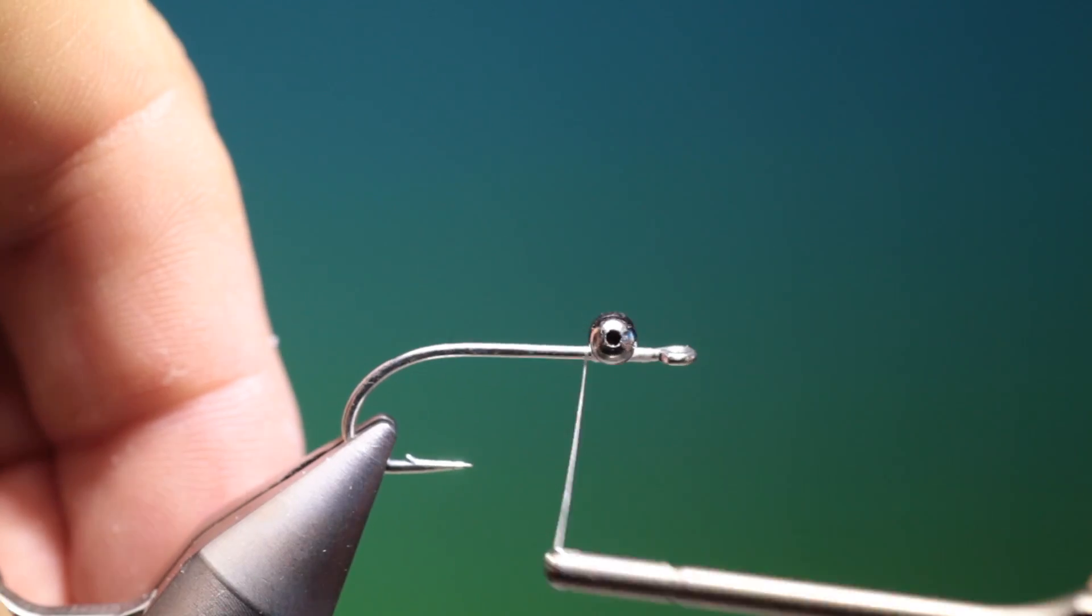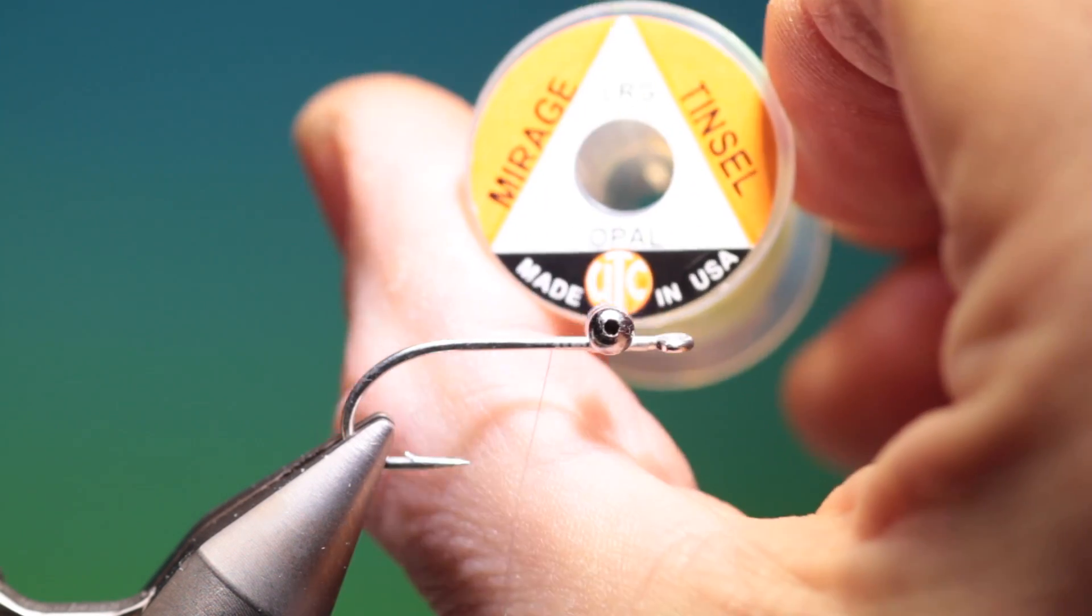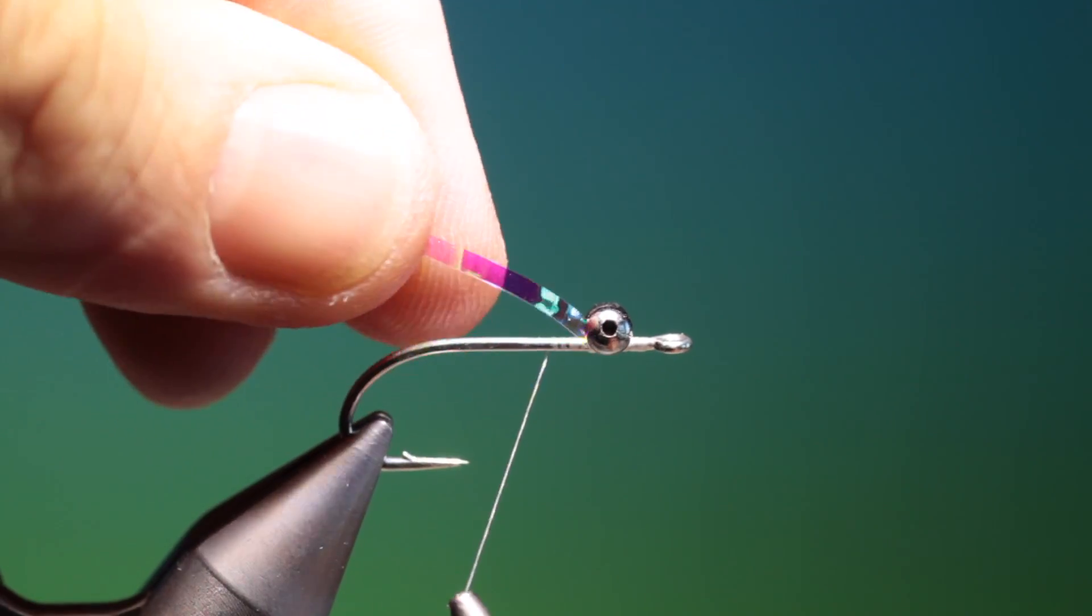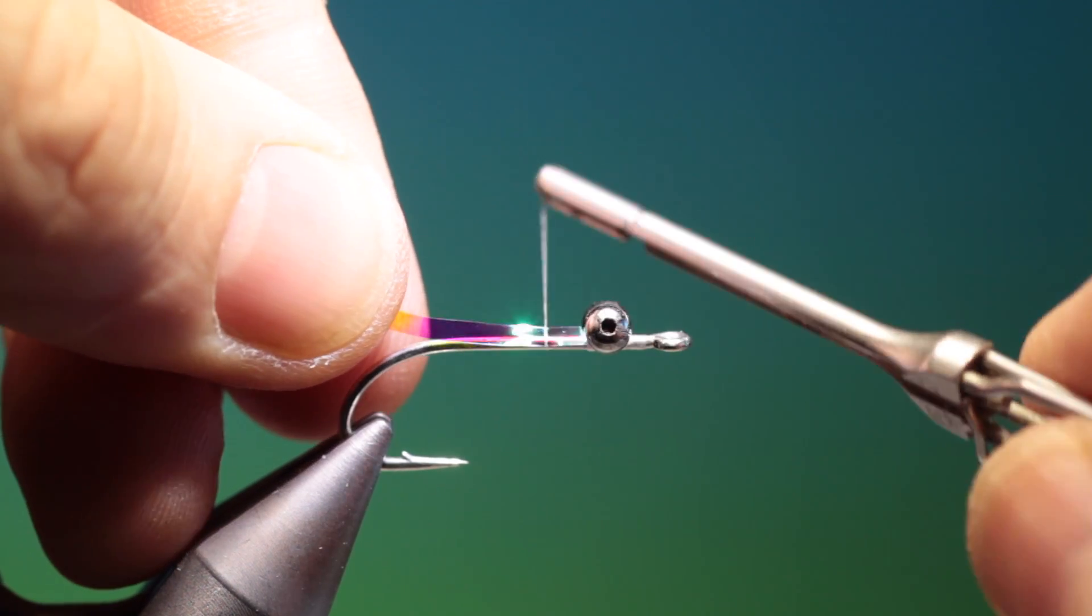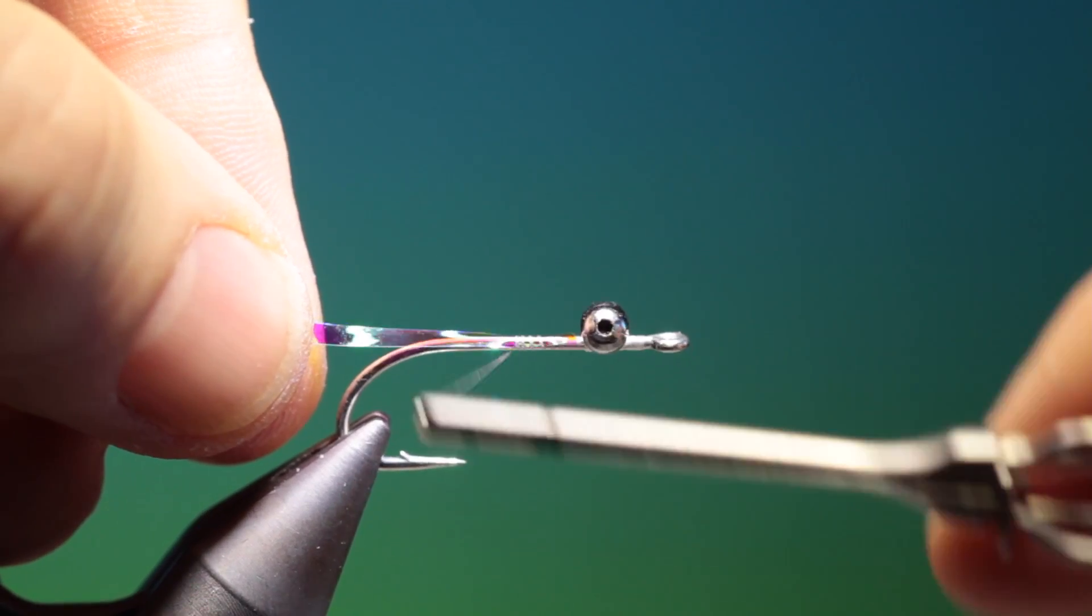And then we go back to about there. We need some tinsel, this is UTC Mirage. Just place this at the side of the hook shank like so and we'll just tack this in.